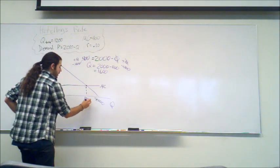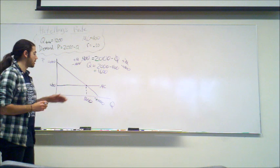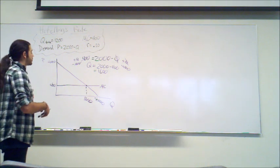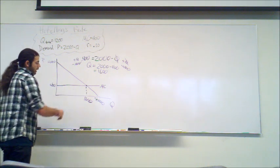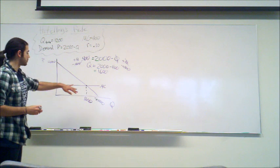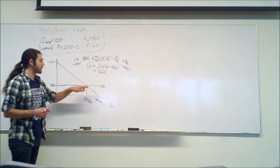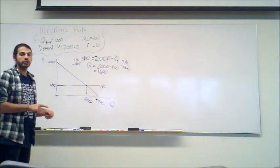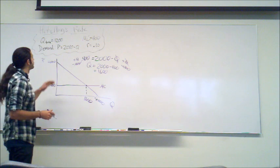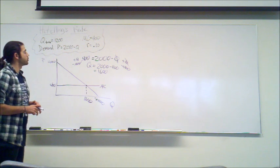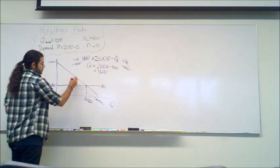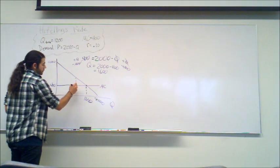So if we had an unlimited amount of resources, we would extract up to 1,600 units. After that, the extra benefit — or what you could get from the market — would be less than the marginal cost of extracting it, so you wouldn't continue. However, we know that we only have 1,200 units of Q, and so we have to stop extracting at 1,200.